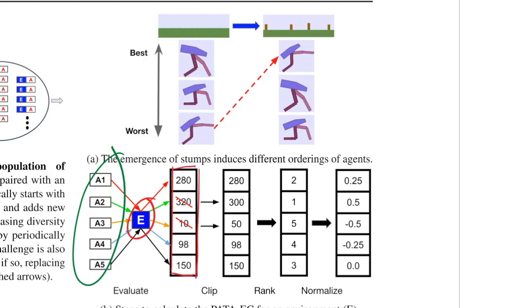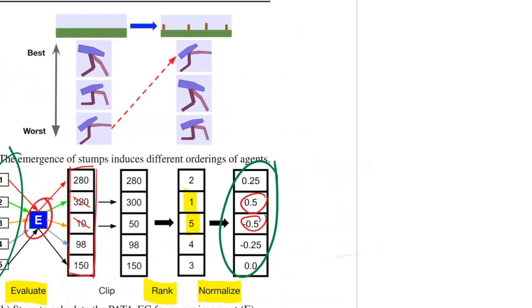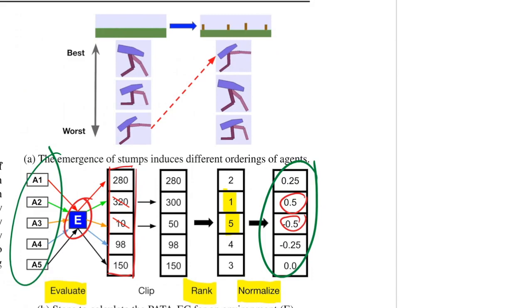And then we clip and bound the score. So the max here is 300 and the minimum is 50. But in any case, we then rank them. So we evaluate them and then we rank them from best to worst. And then we normalize, which simply means that the best one gets a score of 0.5 and the worst one gets a score of negative 0.5.